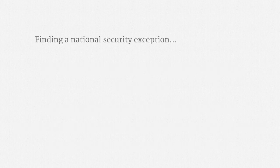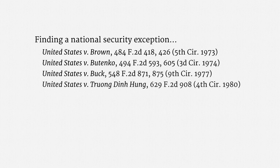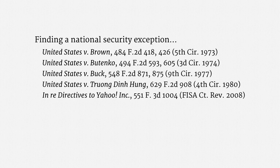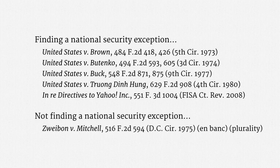That's all the guidance the Supreme Court has provided so far. In the years following Keith, the Third, Fourth, Fifth, and Ninth Circuits all found a national security exception. Those cases arose from warrantless surveillance before FISA was enacted. More recently, in 2008, the FISA Court of Review also held that there is a national security exception to the Fourth Amendment's ordinary protections. Lower courts are now considering the issue again in the context of incidental warrantless surveillance under Section 702 of the FISA Amendments Act. I think it's fair to call this the majority view, though it's come under exceptional criticism. There is one appellate court that declined to craft a national security exception — the opinion from the D.C. Circuit was just a plurality, arguably dicta, and a subsequent opinion in the same circuit appeared to disagree. So, the majority view for now is that there is a national security exception.